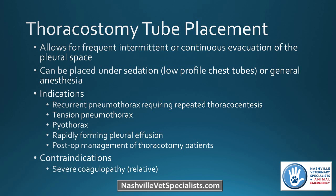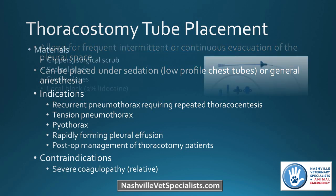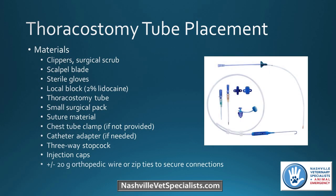The only real contraindication is severe coagulopathy, and again that's relative since this is usually a life-saving procedure. Materials needed are similar to thoracocentesis, plus obviously the chest tube itself. There are different ways to do that. Here is a picture of a low-profile Mila chest tube kit with all the components. Depending on whether you use that versus a larger bore chest tube, the method of securing it will differ.